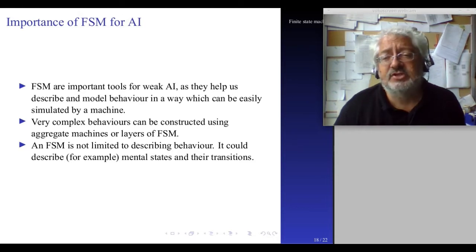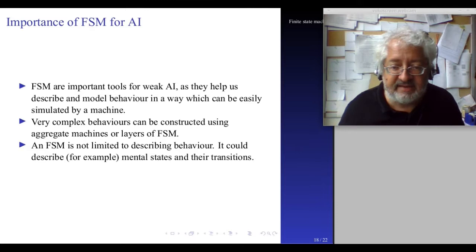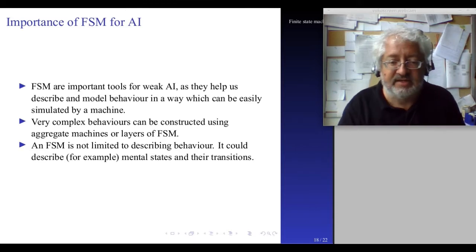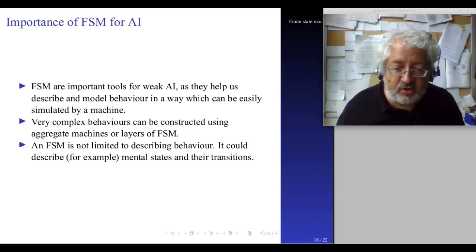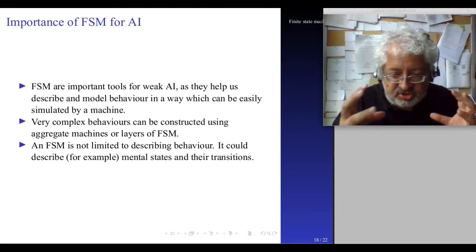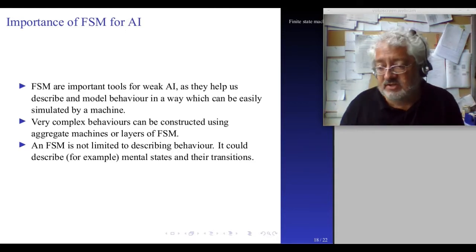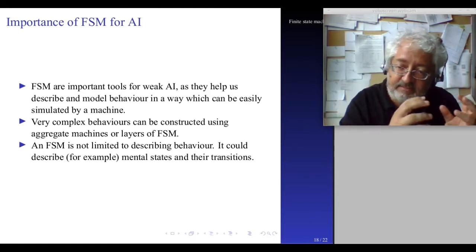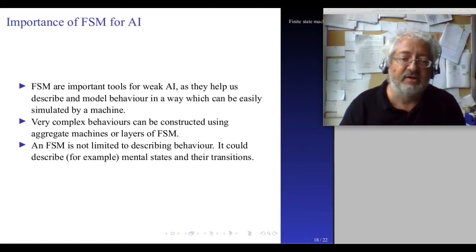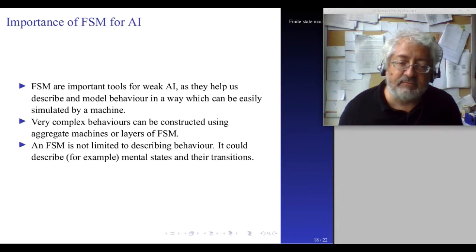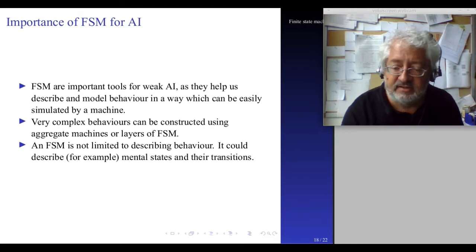So why are finite state machines important for AI? They help us describe and model behavior in a way which can be easily simulated by a machine. Very complex behaviors can be constructed using aggregate machines or layers of finite state machines. And a finite state machine is not limited to describing behavior. It can describe, for example, mental states. It can describe transitions between mental states.